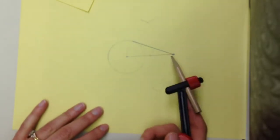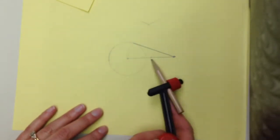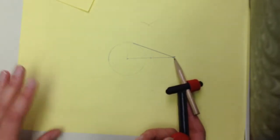The first construction we're going to do today is to create a tangent line to a circle from a point not on your circle.